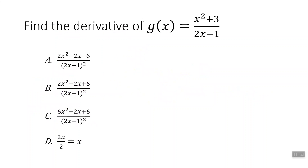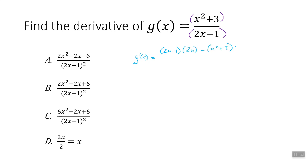Here's another one for you to try. Find the derivative of g of x where we've got x squared plus 3 on top and 2x minus 1 on the bottom — pause it if you need to. Our derivative rule says low D high, so derivative of the top gives us 2x, minus high D low — derivative of the low is just 2 — square the bottom: 2x minus 1 squared, and away we go.